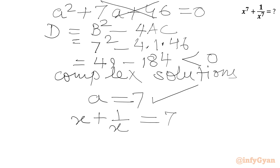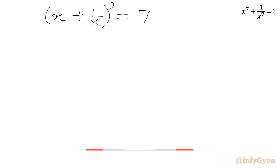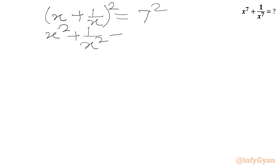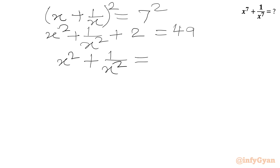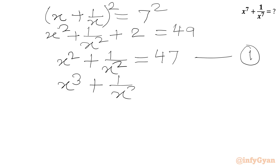Now we have to calculate x⁷ + 1/x⁷. We start by squaring x + 1/x = 7, giving x² + 2 + 1/x² = 49. Subtracting 2 from both sides: x² + 1/x² = 47. This is equation 1. Our given expression x³ + 1/x³ = 322 is equation 2.